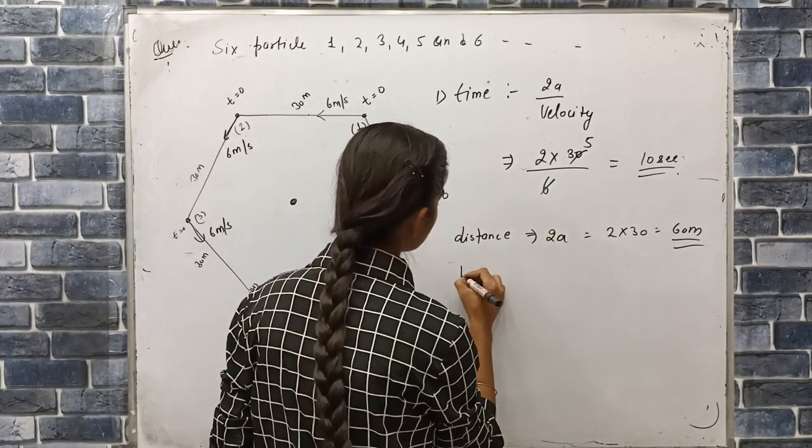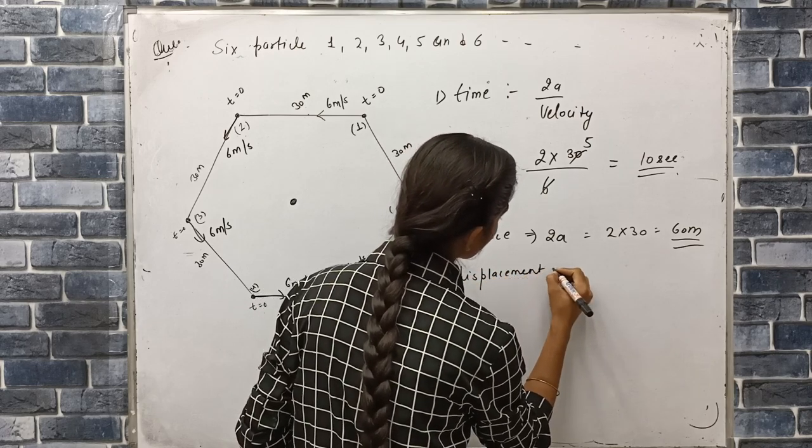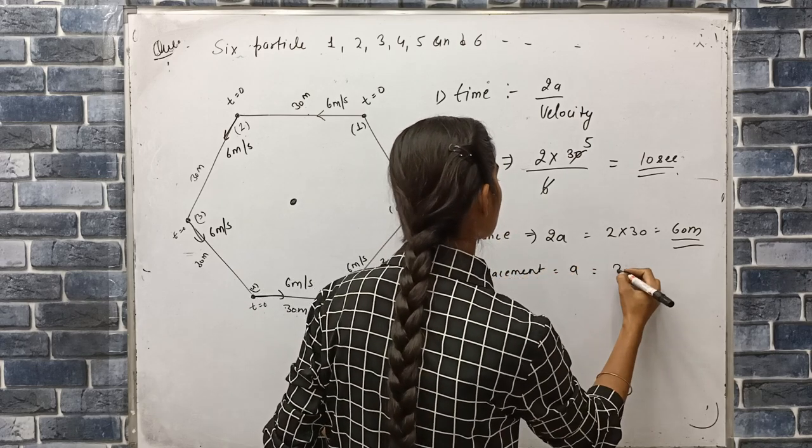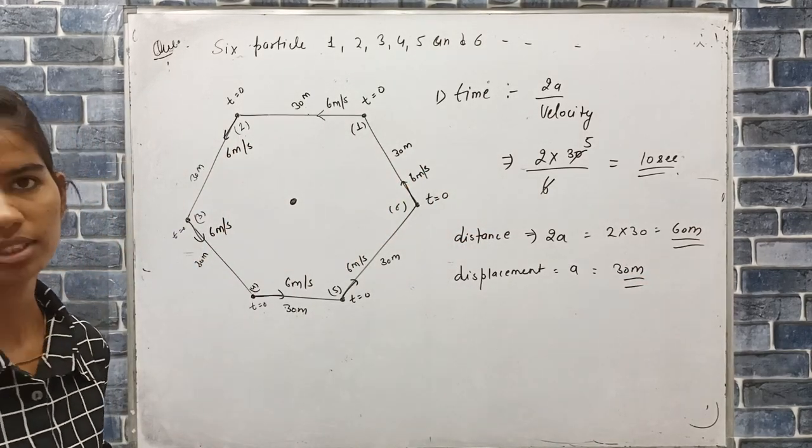And displacement jho hooga? Displacement hojaega iska a ke equal. Go get me hajaega ki 30 meter. Displacement hojaega ki a ke equal 30 meter. This is the case.